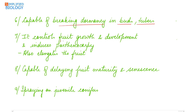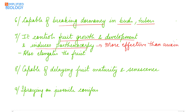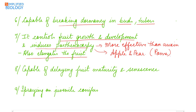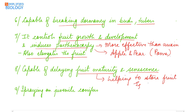Gibberellin controls fruit growth and development and induces parthenocarpy — it is more effective than auxin in inducing parthenocarpy. Parthenocarpy is the formation of fruit without fertilization. It induces parthenocarpy in apple and pear (pome fruits), and is also capable of increasing the size of the fruit. It can delay fruit maturity and senescence, thus helping to store the fruit — for example, in citrus fruits.